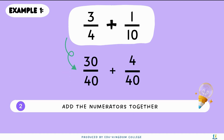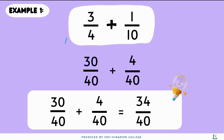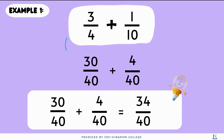Step two is to add the numerators together. In this case it will be thirty plus four, which gives us thirty-four. When adding and subtracting fractions the denominator remains the same, so we do not need to add them together. So the answer so far is thirty-four over forty.